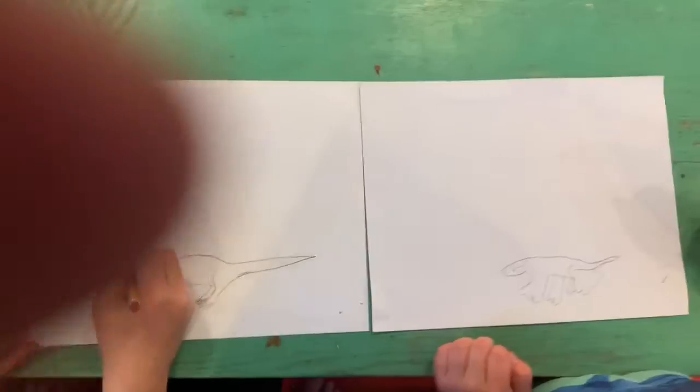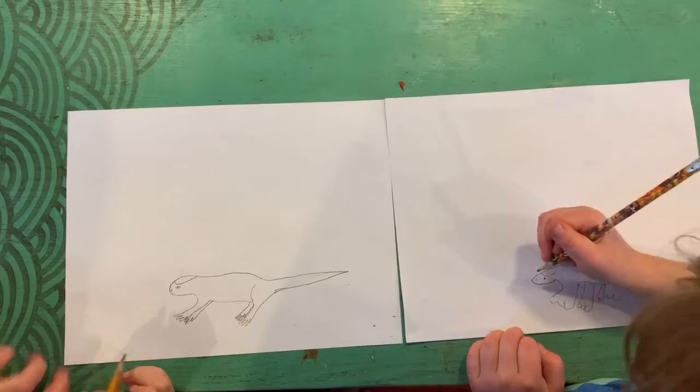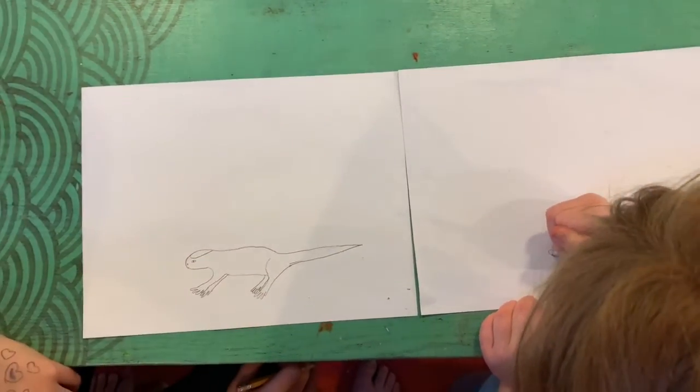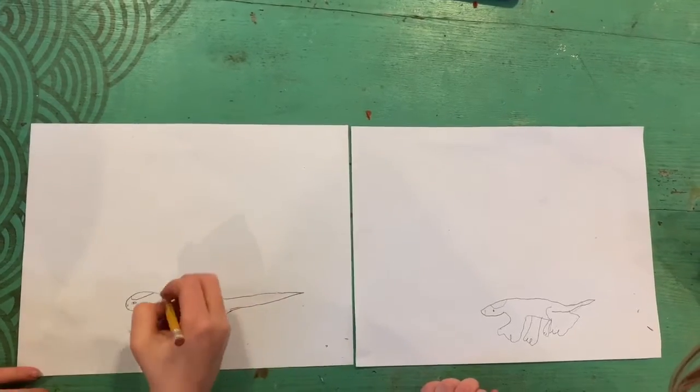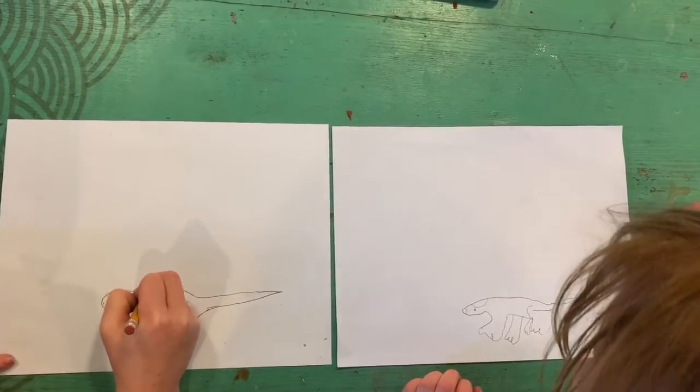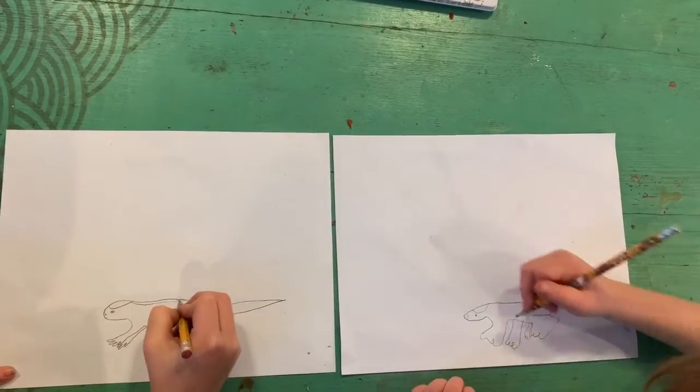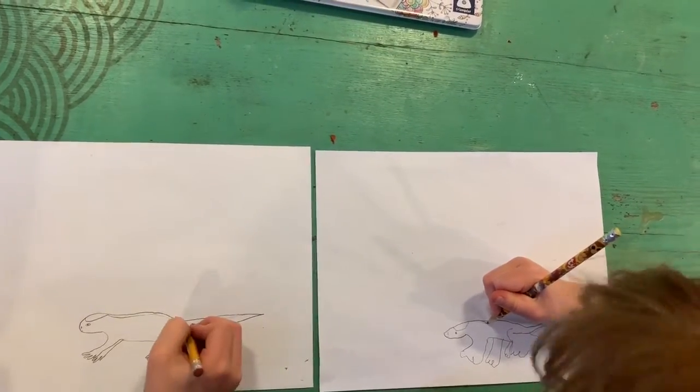Now the mouth. Great. Now let's draw some spots on its back. So a line. And stops right at the tail.